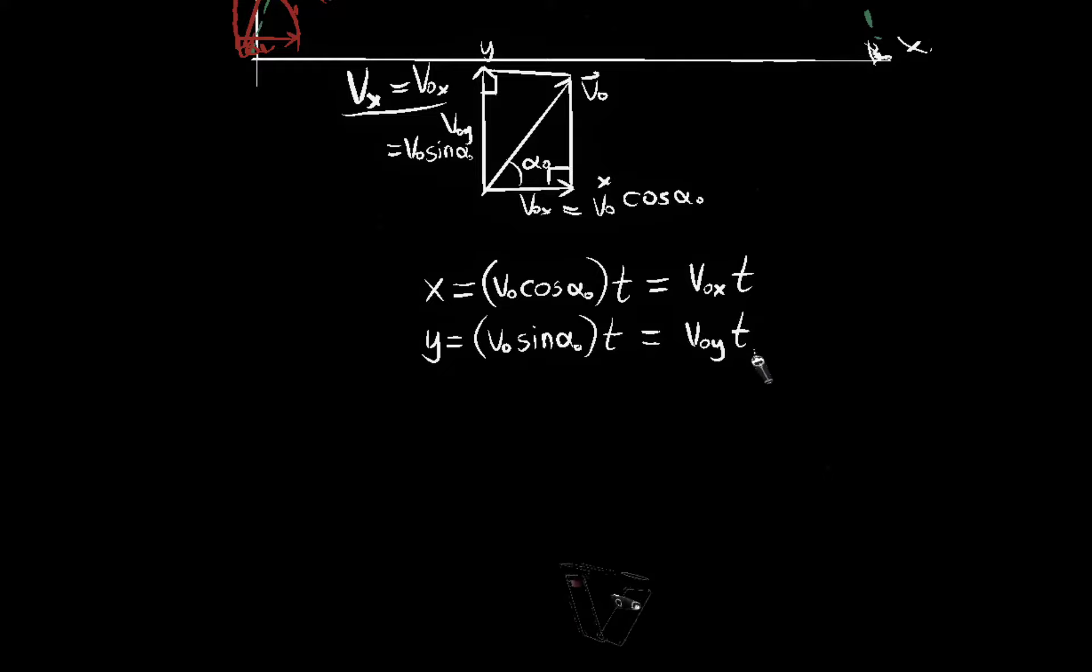So that's v naught y t. So that's x and y, given the magnitude of initial velocity and angle. So if I tell you I shot it at this magnitude, and this angle, then you can find the position of the particle, or the body, that was shot, at any future time t.